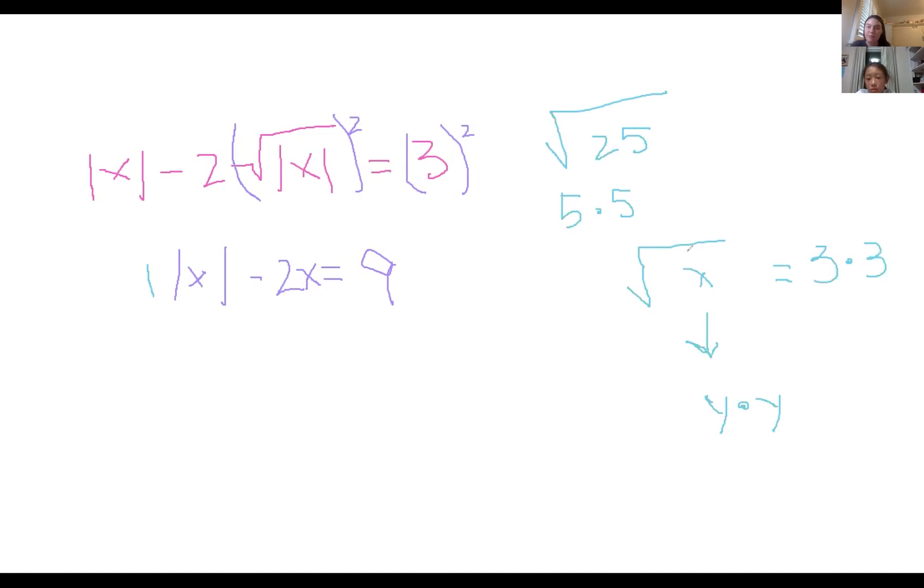So wait, why did you do 3 times 3? So anytime it could have been like 100, any number you have here, I guess this is like your rule. If there's an x in a square root, whatever's on the other side of the equal sign, you square.